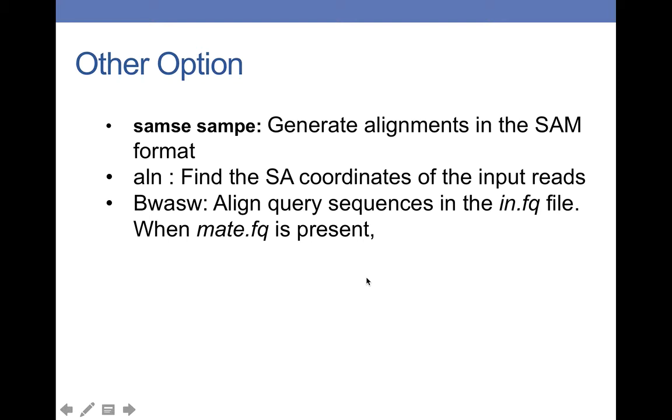There are some other options for using BWA as well. You can use samse and sampe to generate alignment in SAM format for single-end and paired-end data. You can also use aln to find the SA coordinates of the input reads. And bwa sw aligns query sequences in the input FASTQ file when mate file is present.